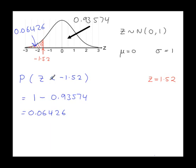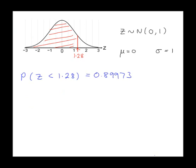This is the previous example. If I do less than or equal to minus 1.52, still the same working out, still the same answer. Less than or equal to 1.28, still the same answer. No changes to your working out.